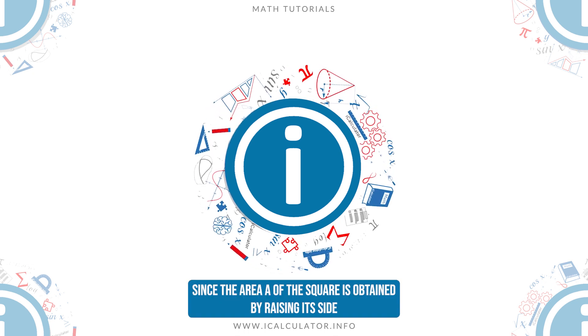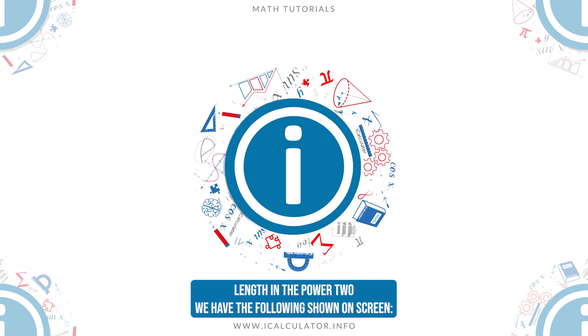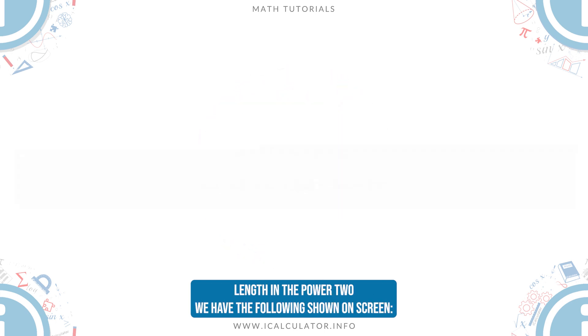Since the area A of the square is obtained by raising its side length to the power 2, we have the following shown on screen.